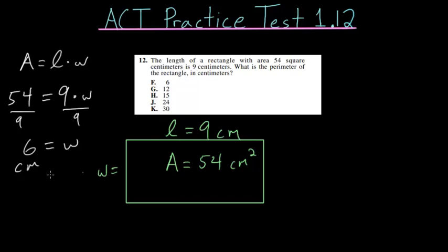Since we now have both the width and the length, the perimeter is fairly straightforward to find since the perimeter is just the length around the outside of this rectangle. If this length is 9 centimeters, then the opposite side would be 9 centimeters as well. The same would apply for the width being 6 over here; it would also be 6 centimeters here.